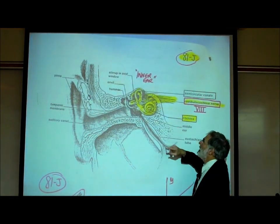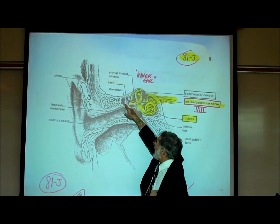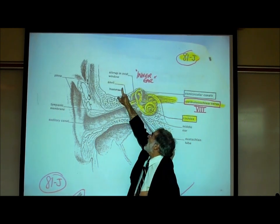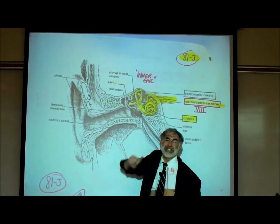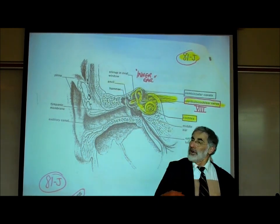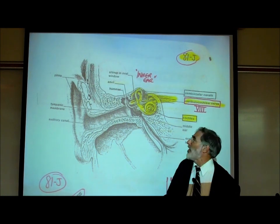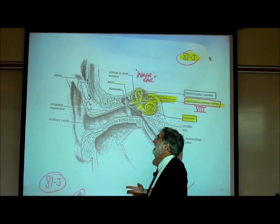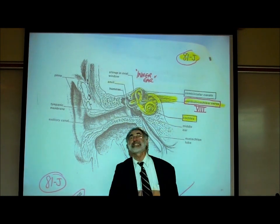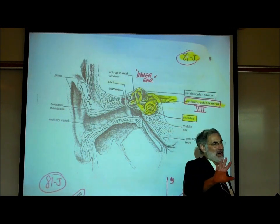They are known in English as the hammer, the anvil, and the stirrup. Or their scientific names are malleus, incus, and stapes. We'll see these written out in a moment.